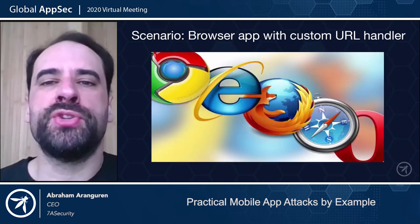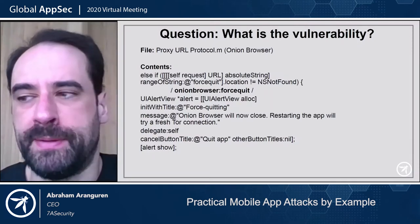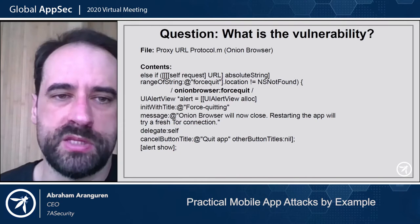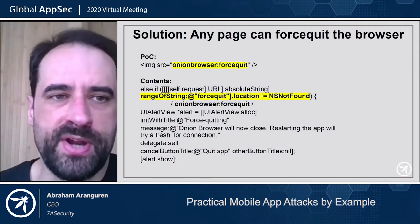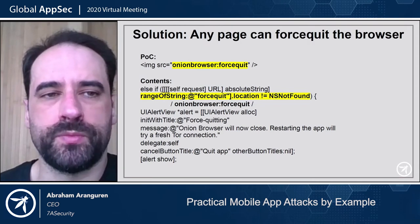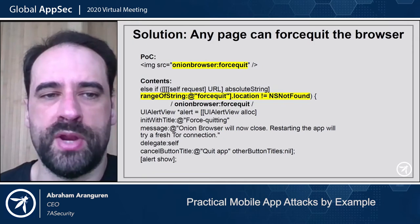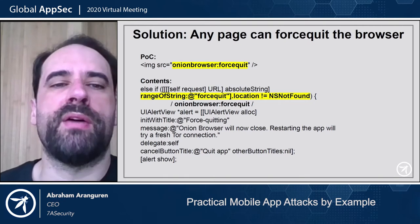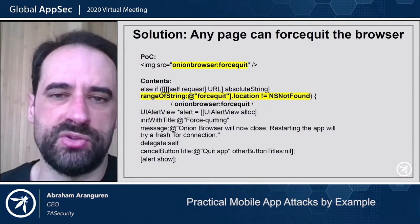Let's look at URL scheme attacks — custom URL handlers. Sometimes applications define a custom URL handler. In the case of the Onion browser, there was a function to quit which was exposed using a URL handler. The vulnerability was that you could provide an image that calls this URL handler to tell the application to quit. So we can invoke functionality in the application — a browser in this case — from a page that the browser is visiting, and close the entire browser from our page.